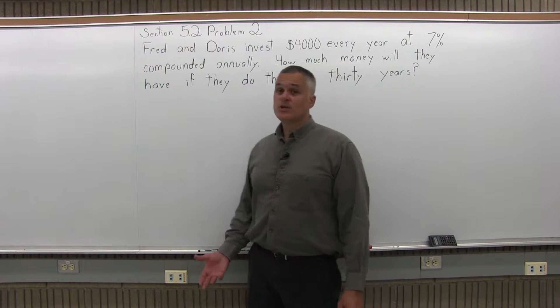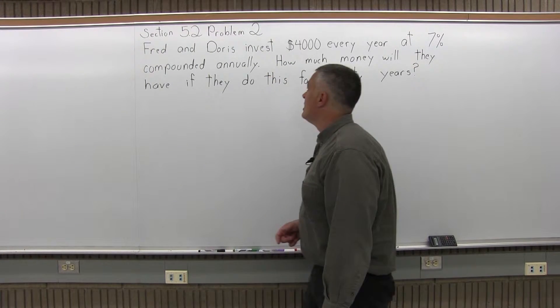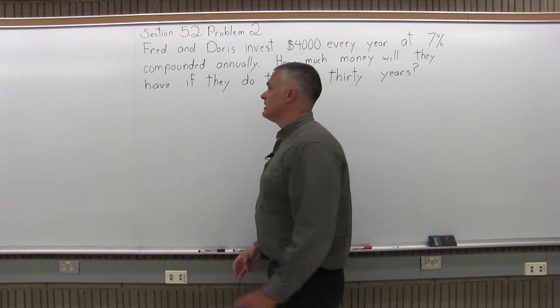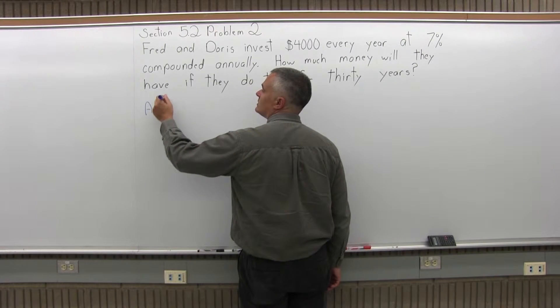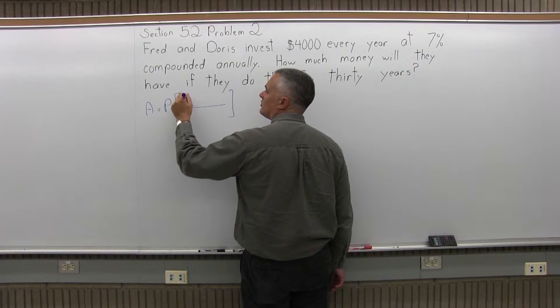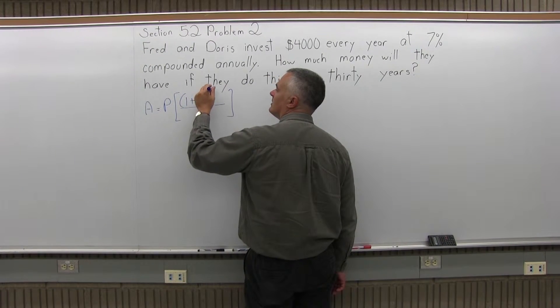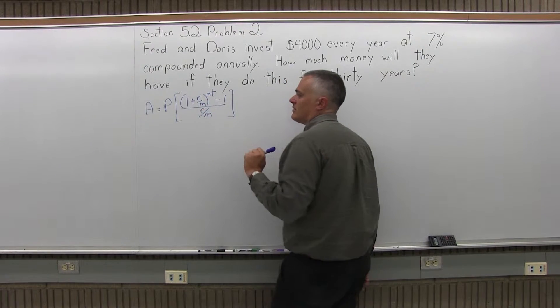So this question is an annuity question. From this section it's either annuity or sinking fund. This one's an annuity because you know how much you're saving on a regular basis and you calculate the end amount. So the annuity formula is A equals P times some brackets and in the brackets we have in the numerator 1 plus R over M to the M times T power and that's minus 1 and underneath that the denominator of the brackets R over M.